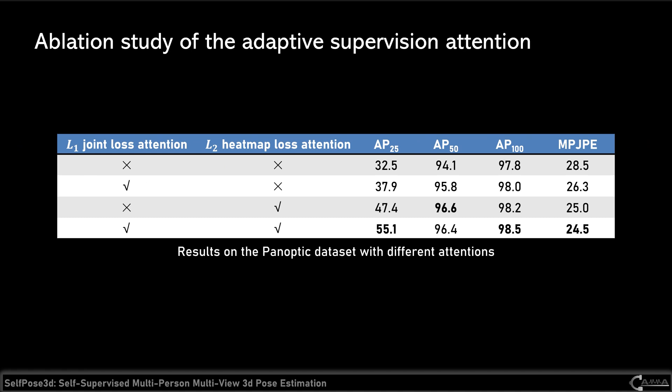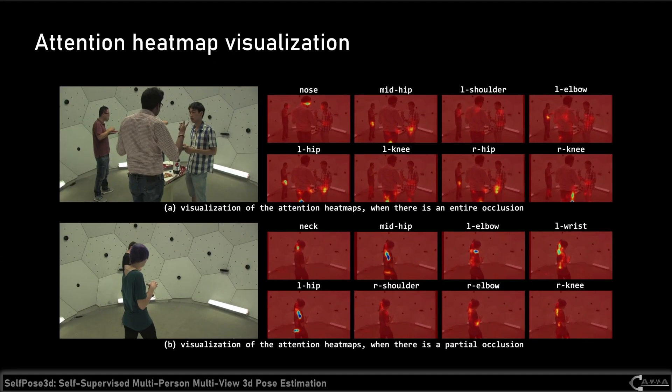We also show the ablation study of the adaptive supervision attention. The L1 loss attention is achieved by ignoring the one view with the largest loss. Both attentions can boost our model's performance dramatically. We also show the visualization of the attention heat maps: when there is an entire occlusion in the 2D image, the heat map tends to ignore the occluded person; when there is a partial occlusion, the heat map tends to infer the occluded joint locations. Therefore, the attention heat map can help our model focus on more reliable supervision signals.